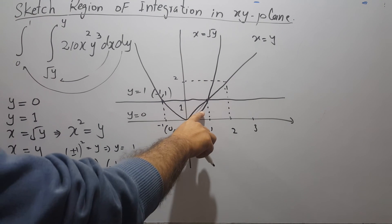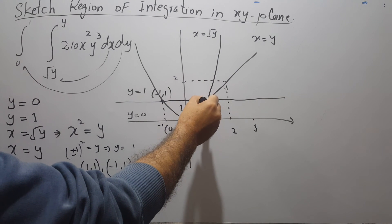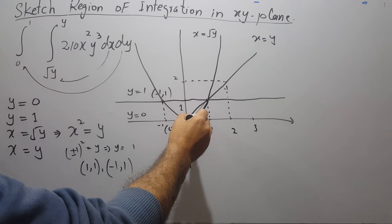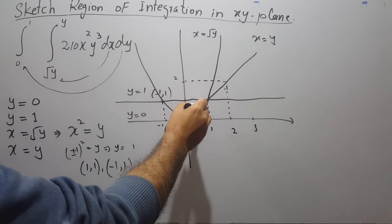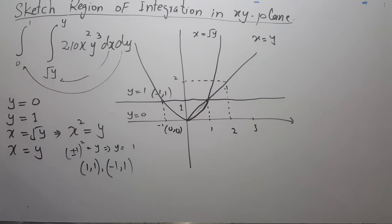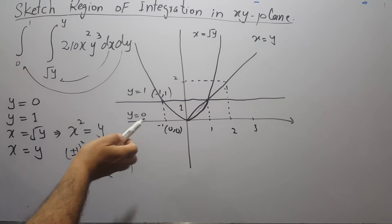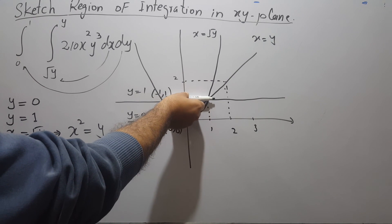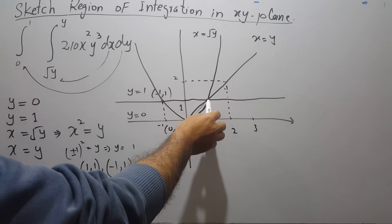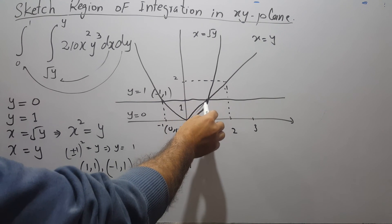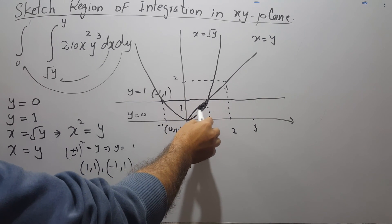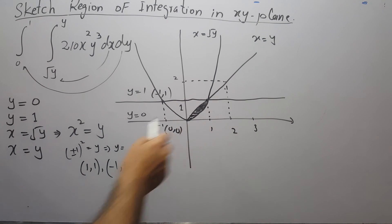So the area to calculate is only this enclosed region between the parabola and the line, for Y between 0 and 1. That is the region of integration. Thank you very much.